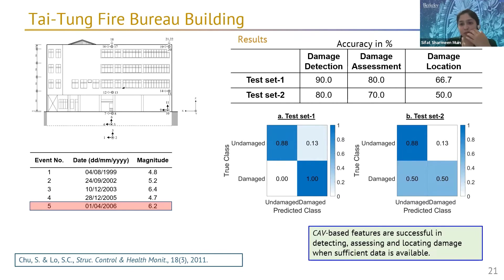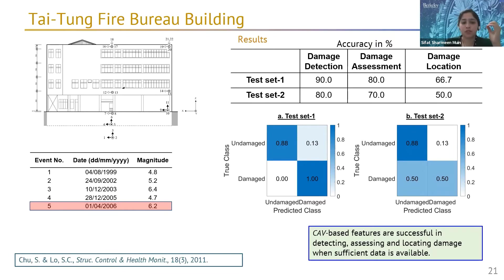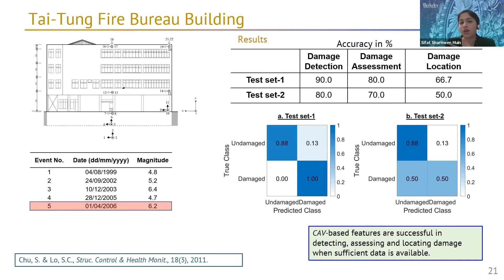The main issue was that a very detailed model of the structure is not always available for existing structures. In most cases, it is not feasible to develop one solely for structural health monitoring due to cost, time, and resource limitations. So the question is: can we perform damage detection or assessment without such a detailed analytical model?